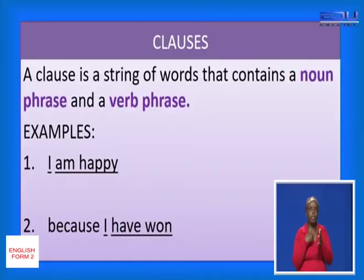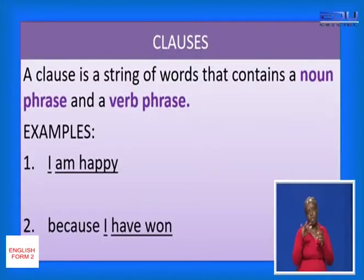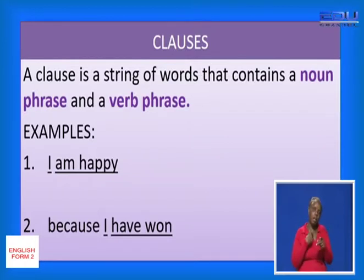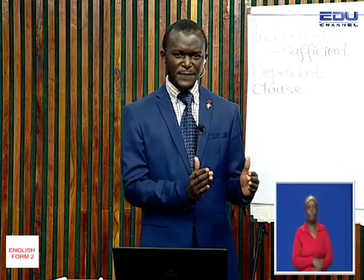Let us look at these sentences that we have. Now, the second one is not a sentence — that's why it begins with a small letter. But the first one can be considered a sentence. At this level, I want us to consider them as clauses: a stretch of words that consists of a noun phrase and a verb phrase. The noun phrase is the one we are calling the subject, and the verb phrase is the one we call the predicate.